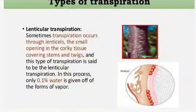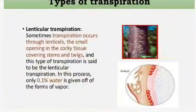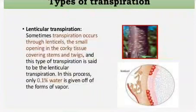Lenticular transpiration occurs through lenticels — small openings in the cork, stem, or bark — and the water that comes out through lenticels is lenticular transpiration. This is the minimum type, at about 0.1 percent. It occurs only when water pressure inside the plant is high enough to force water out through the lenticel pores. Under normal pressure, no transpiration occurs through lenticels.